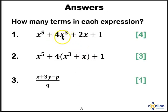Right, did you work out 4 for the first one, 3 for the second because brackets make 1, and only 1 for the last one because division signs or fractions also make only 1 term.